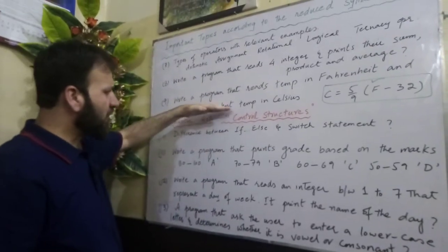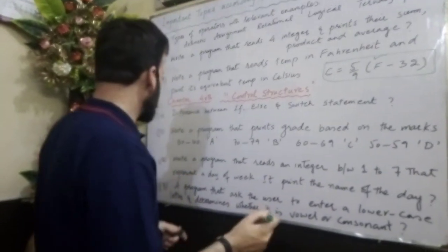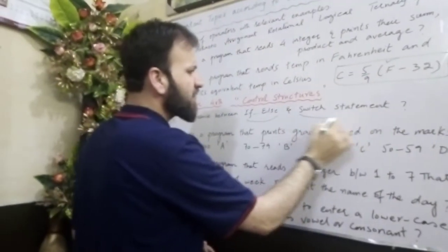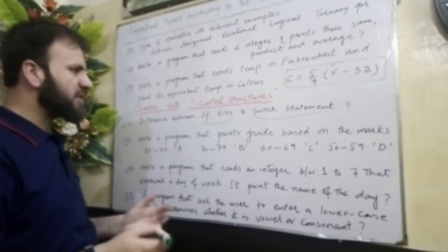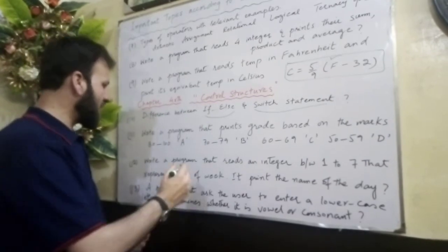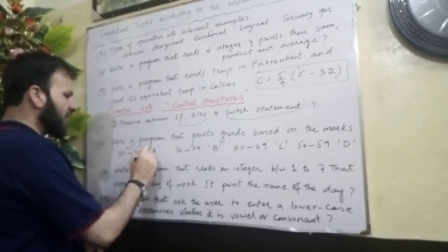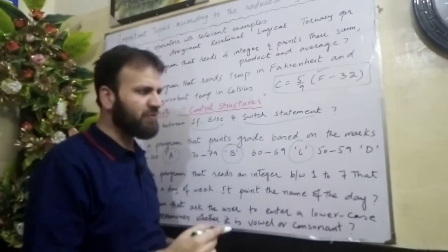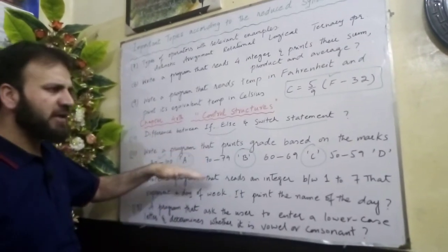Now come to chapter four, which belongs to control structures in C++ programming. Question ten: the difference between if-else and switch statements — what is the difference, for what purposes each is used, and what is the syntax. Question eleven: write a program that prints a grade based on marks — if marks are 80 to 100, print grade A; 70 to 79, print grade B; 60 to 69, grade C; 50 to 59, grade D. You have to write this C++ program; it is practically important and appears in board papers.